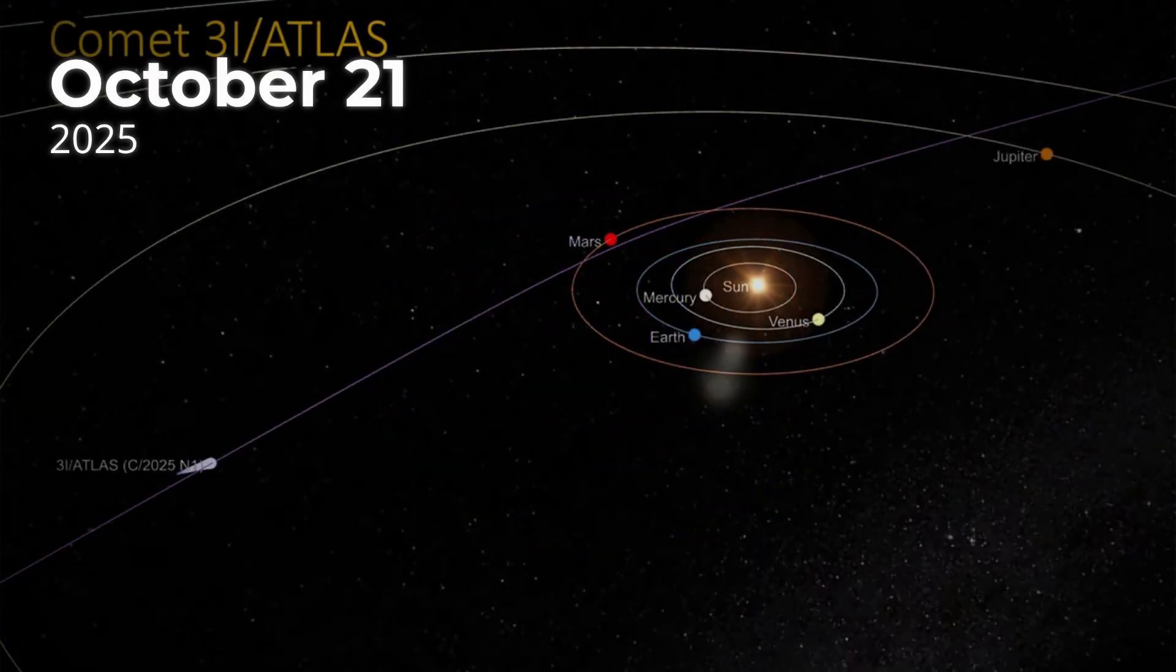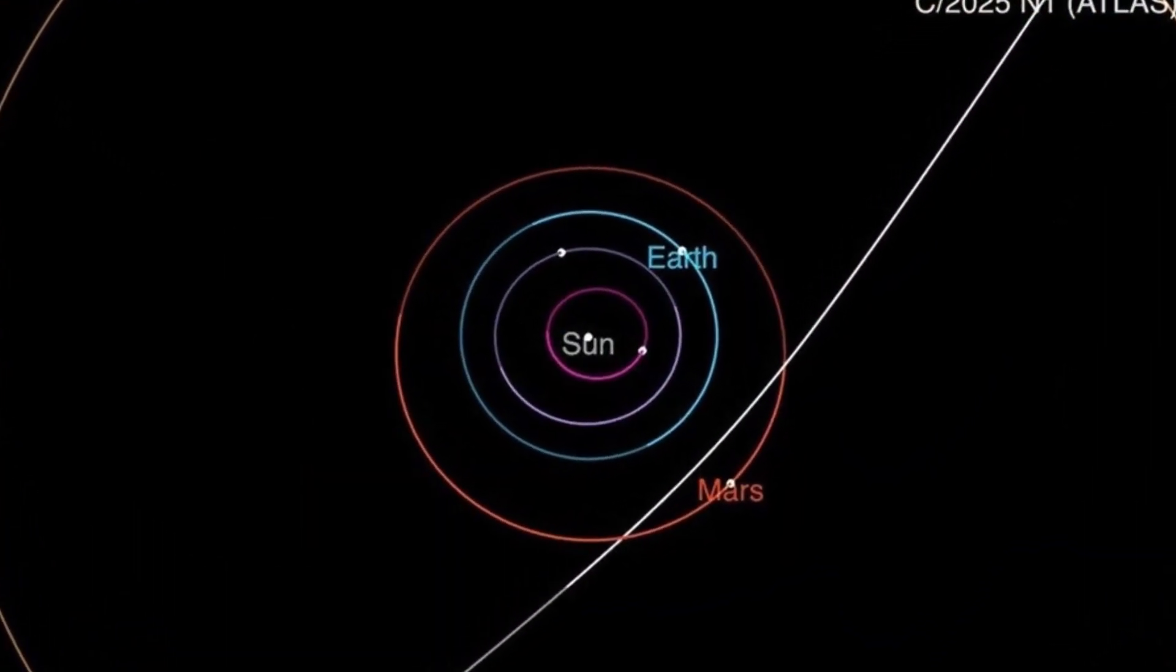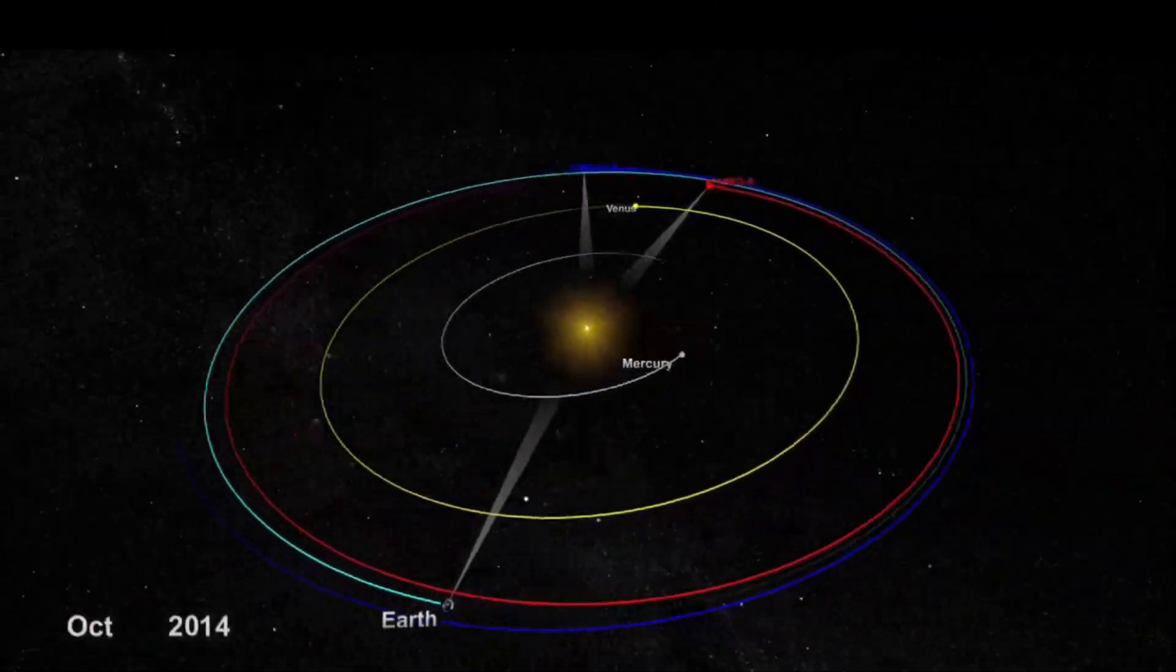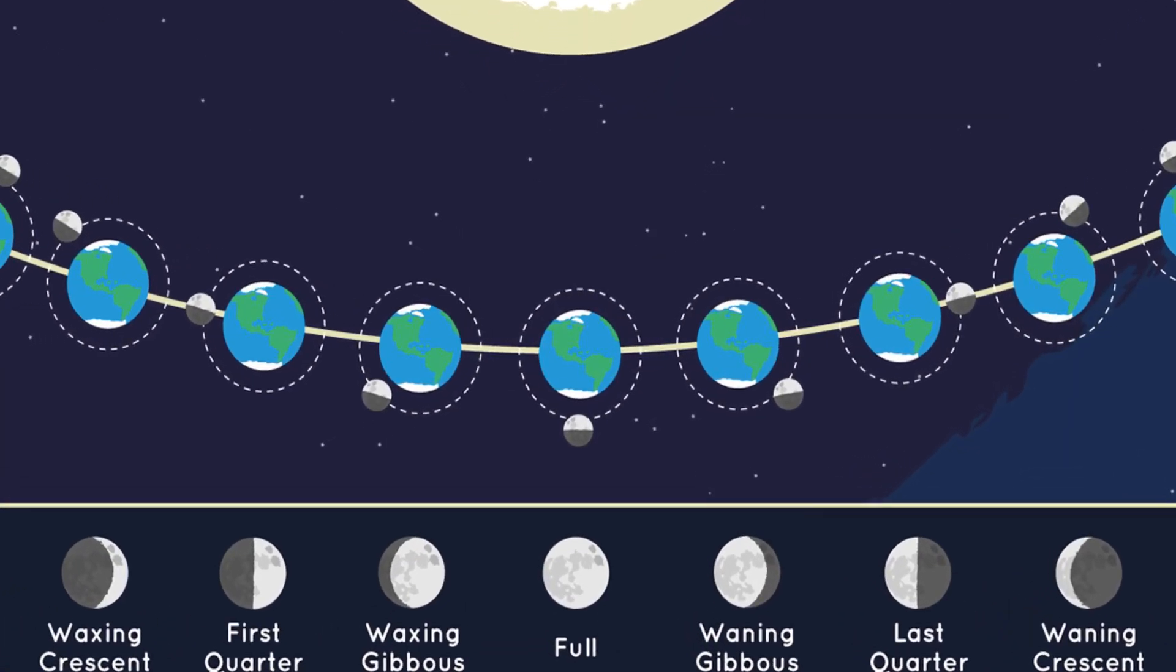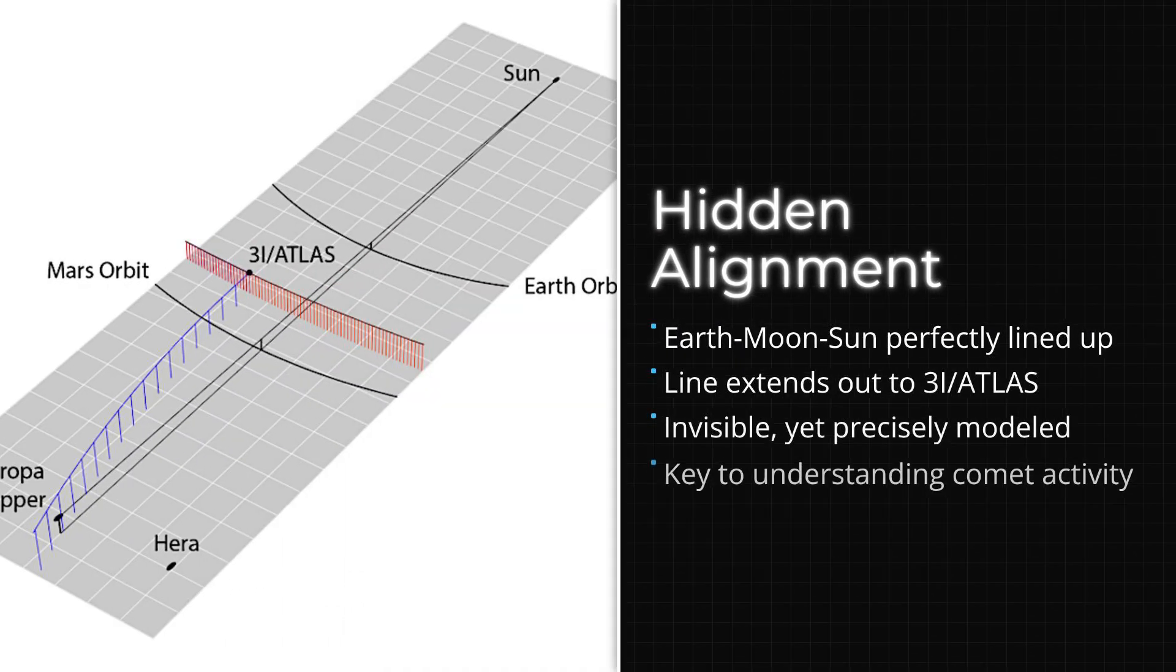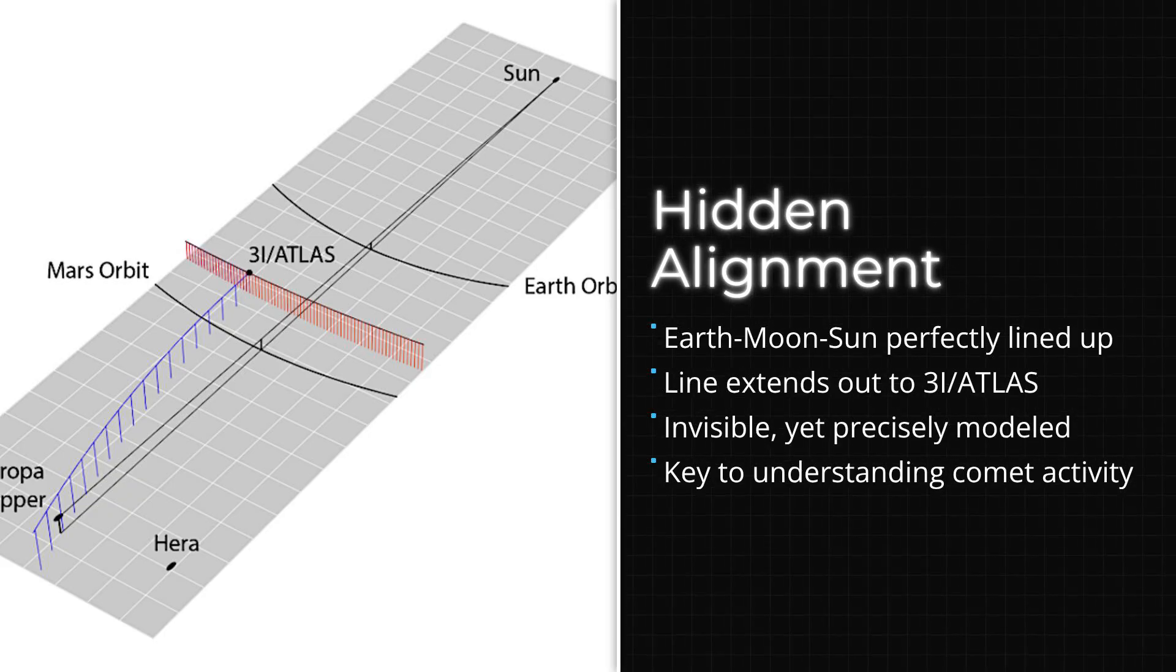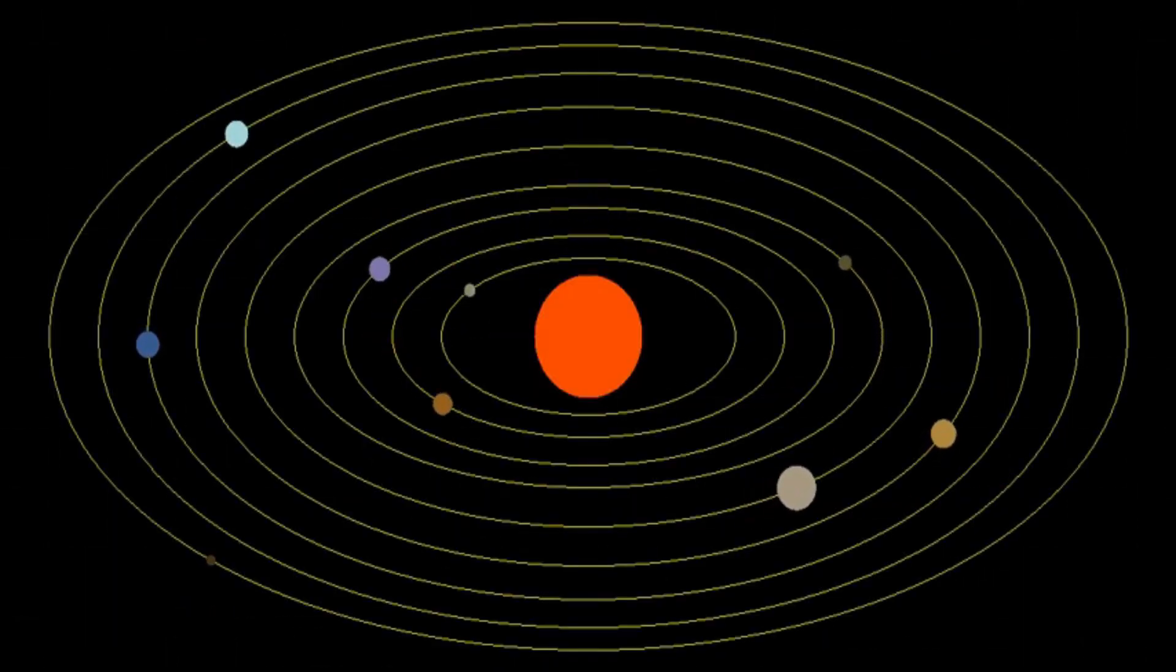On October 21, 2025, the solar system's geometry delivered a rare blind spot. While the world watched radiation levels spike, 3I/Atlas slipped directly behind the Sun from Earth's perspective. This is the moment of superior conjunction, a configuration where the Sun stands between Earth and a distant object, blocking all direct observation. At the same time, the Moon reached its new phase, lining up almost perfectly with the Sun and Earth. The result? A straight invisible line, stretching from our planet, through the Moon, to the Sun, and out to 3I/Atlas, now hidden on the far side.